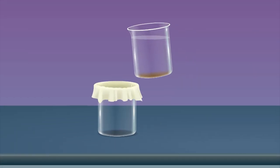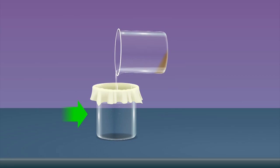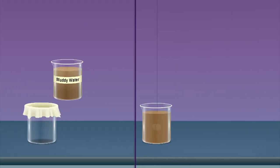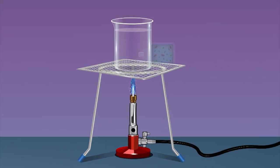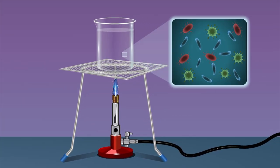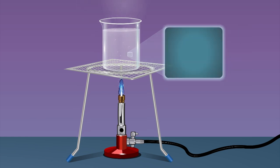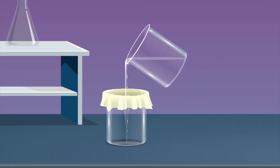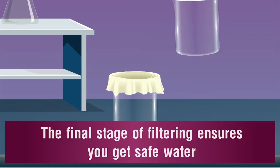Even though the water may look clean at this stage, it will still have germs in it. On boiling, the temperature of water rises and the excessive heat kills the germs. The final stage of filtering ensures you get safe water.